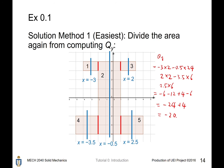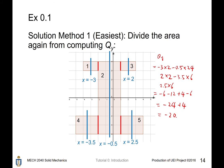There is another method to compute Qy. Recall that the axis x = −0.5 is the axis of symmetry of the entire region. Since the average position x̄ of the entire region is −0.5 and the total area is 40, then Qy = −0.5 × 40 = −20. This result is exactly the same as the previous method.